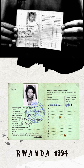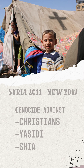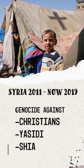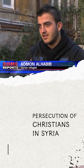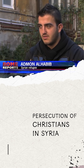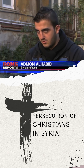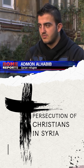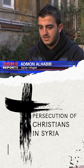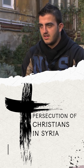Moreover, the Christian, Yazidi, and Shia minorities currently targeted by the Assad regime in Syria are singled out for religious beliefs. Before the war, there was no problem between Christians and Muslims — there were no differences. We lived very well, but when the war started, and especially when ISIS arrived, the problems began for the Christians.